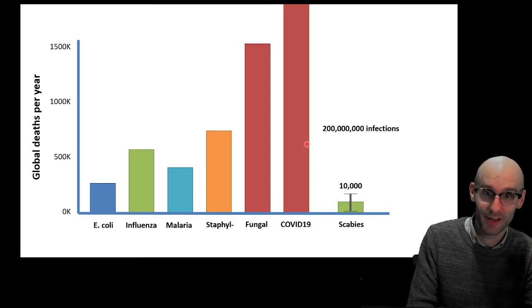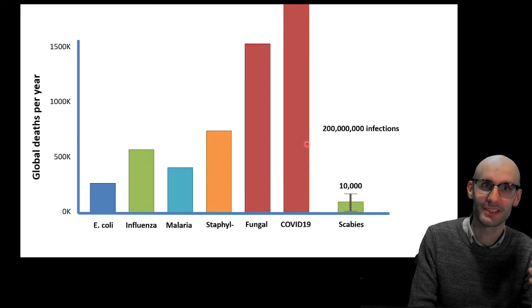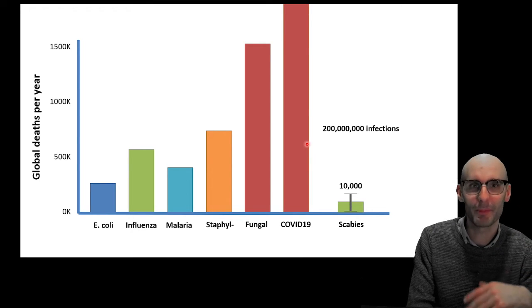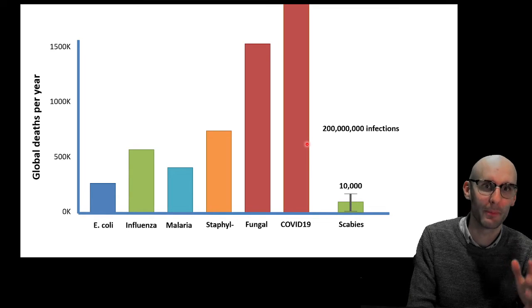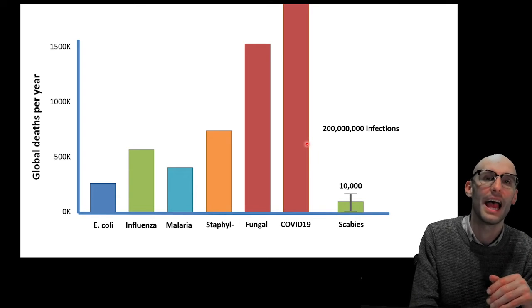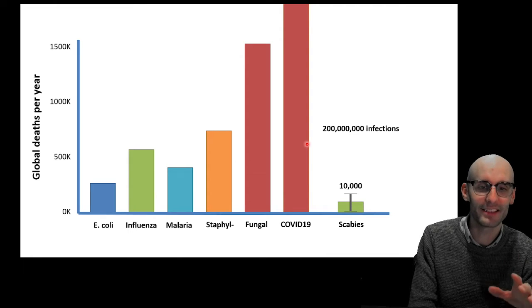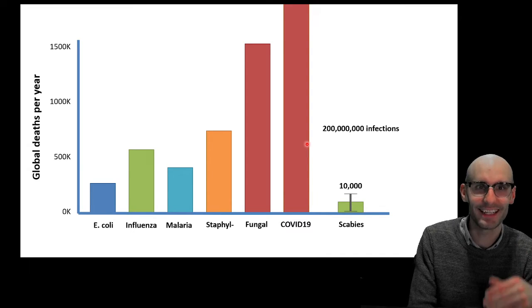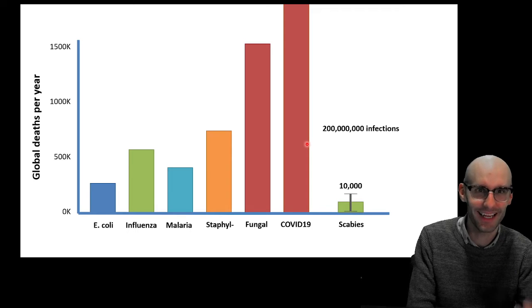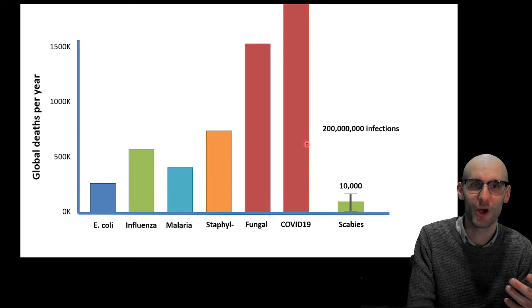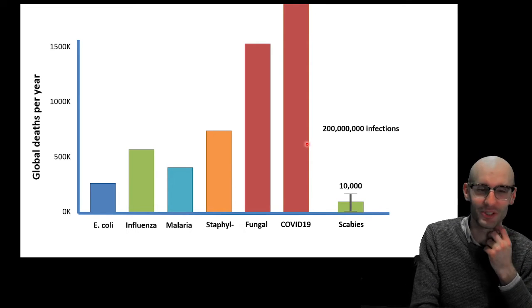But it's really prevalent. So 200 million infections annually. So it's typically not a long-lasting infection. People get treatment because it's itchy, although there are chronic cases. And so that is not prevalence. That's incidence. 200 million a year of scabies infections occur, which is so gross.